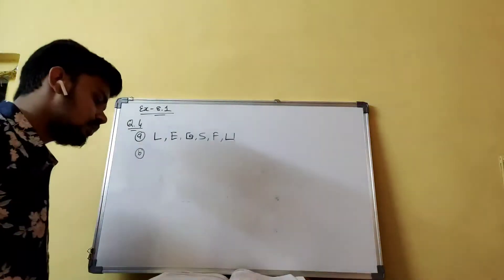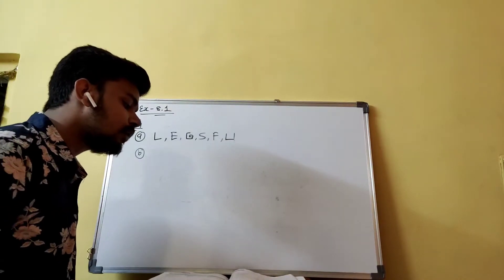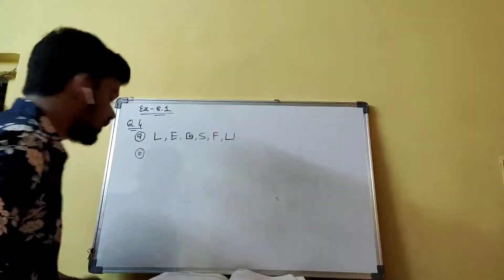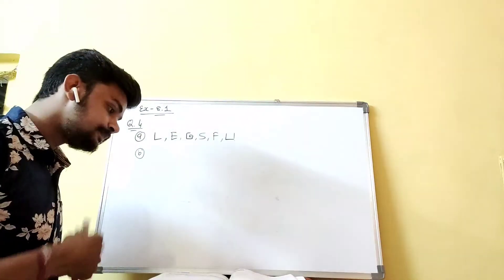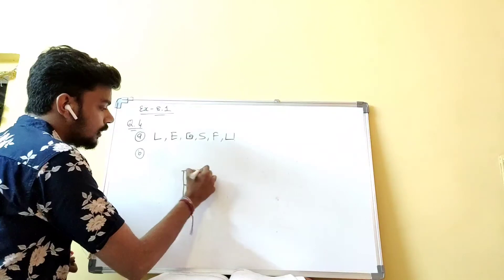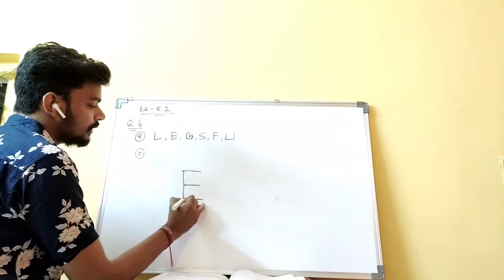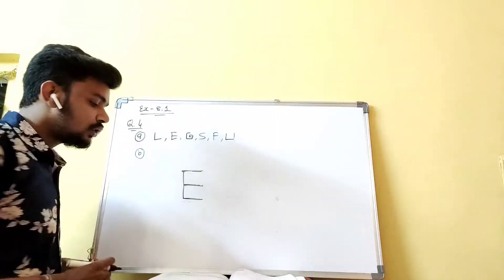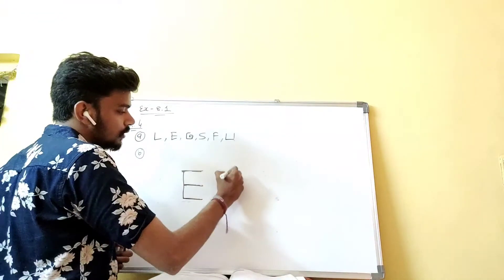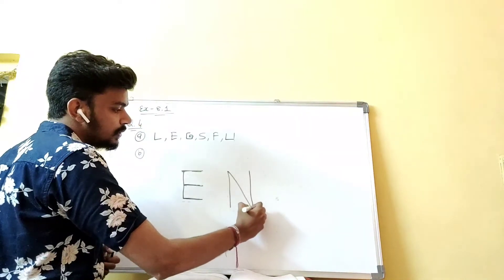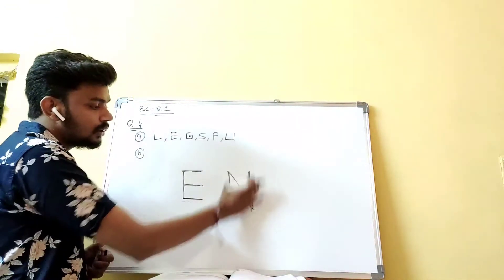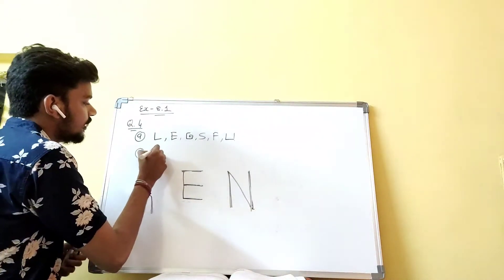Now question number (b): which letters have only one pair of parallel lines? L has no parallel line. E, if you draw it, has two or three pairs of parallel lines, so E is not included. A doesn't have a parallel line. R doesn't have a parallel line. N - yes, N has a parallel line: this line and this line make one pair, and there is only one pair, so N is included.